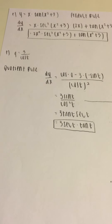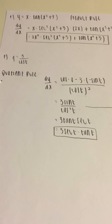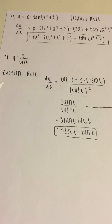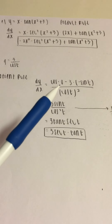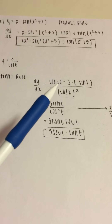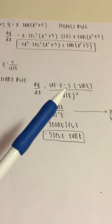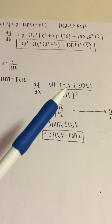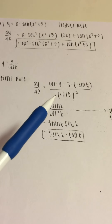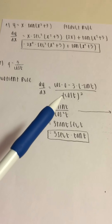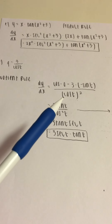For F, we get g equals 3 over cosine t. To solve this, we use the quotient rule. We take the bottom function cosine times the derivative of the top — the derivative of 3 is 0 — minus the top function 3 times the derivative of cosine, which is negative sine t, all over the bottom function squared, cosine squared t.